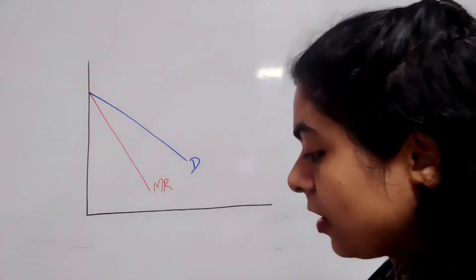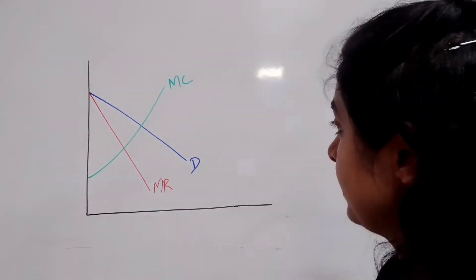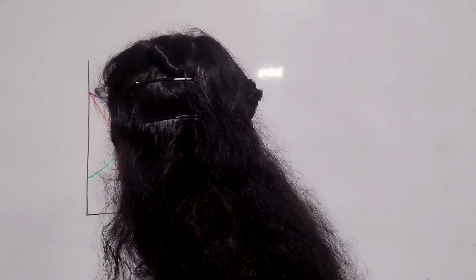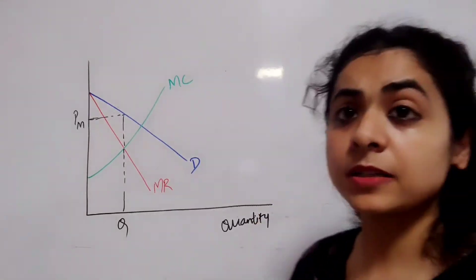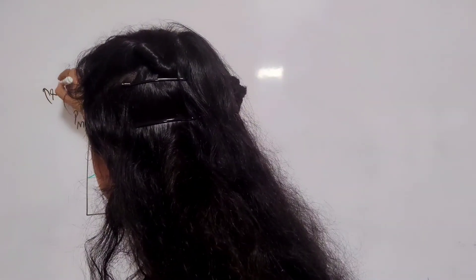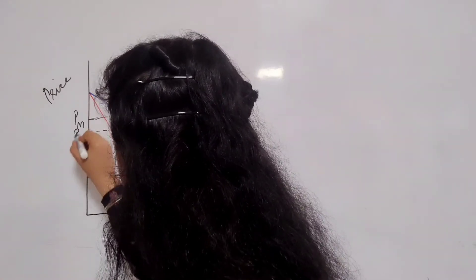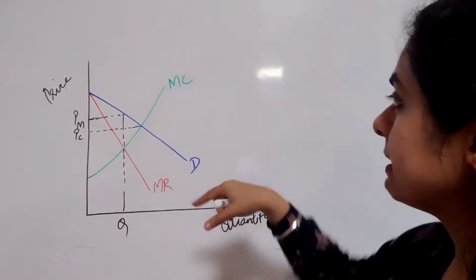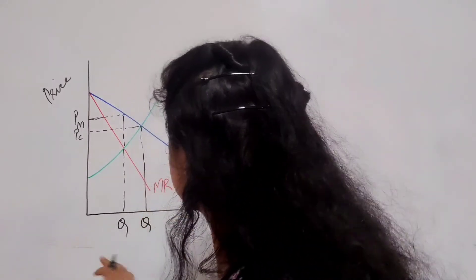Let's draw the marginal cost curve. This is the price to be charged by the monopolist and the corresponding quantity. If I compare this with that of the competitive market, for a competitive market this would be the price, which is determined by the intersection of the demand curve and the supply curve, and this would have been the output.